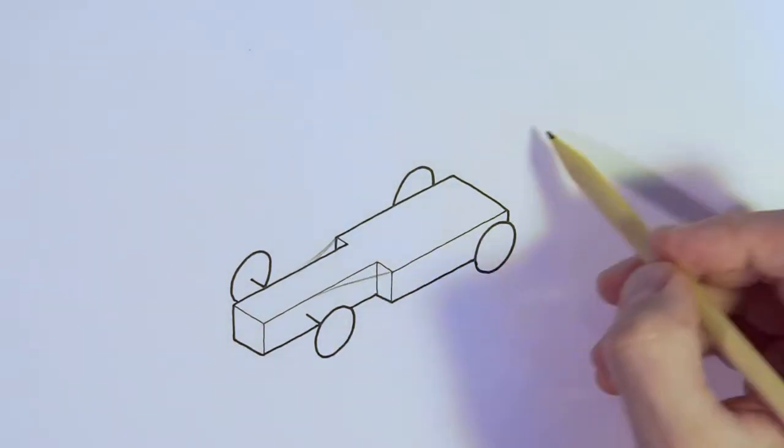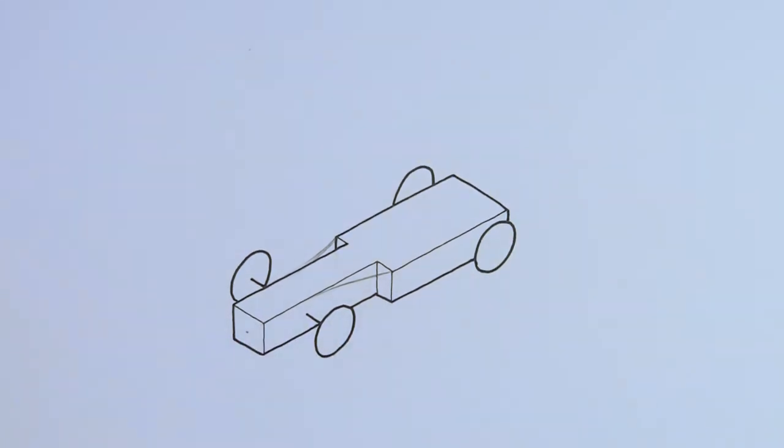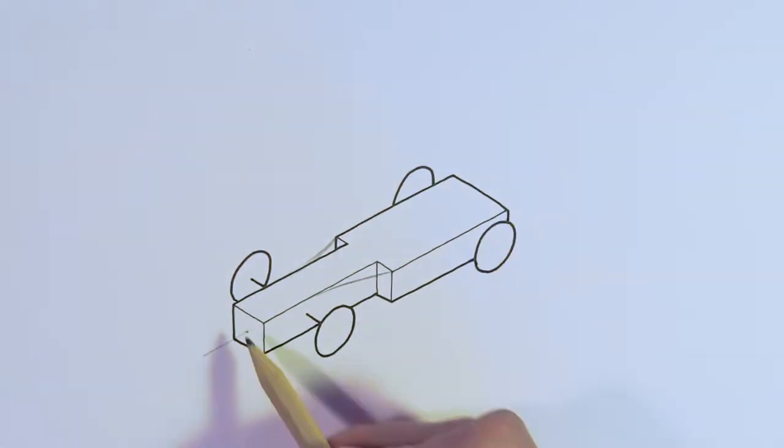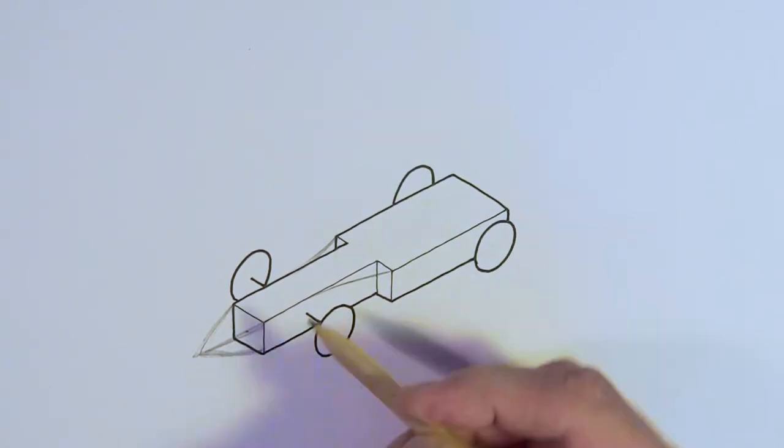We've sped the film up so we're not spending too long showing you, but we're using isosketch to help get the geometry and lines in parallel so the drawing looks right and starting to draw features onto the chassis.